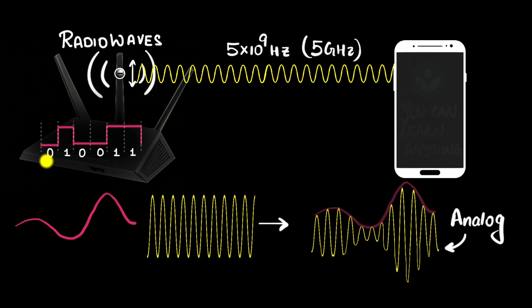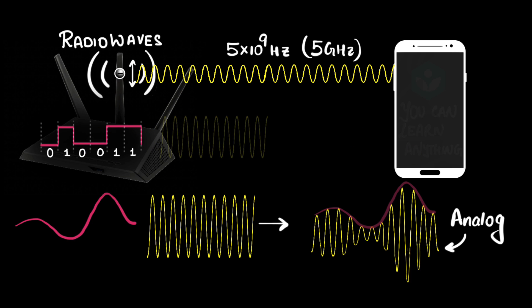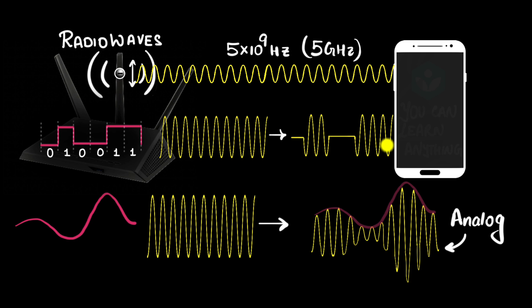Unlike an analog signal, a digital signal is discrete — you only have two values, zero or one, nothing in between. With digital modulation, if we modulate the radio wave using this message, we get a modulated signal where the amplitude is either maximum or zero, representing the zero or one bits.